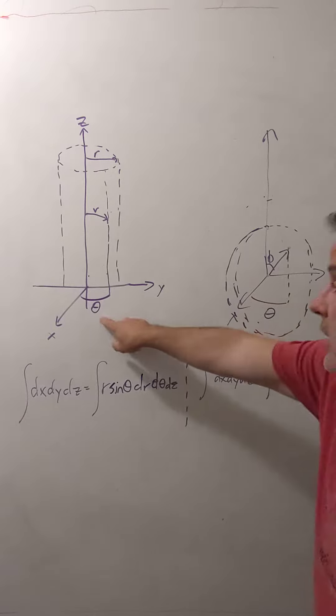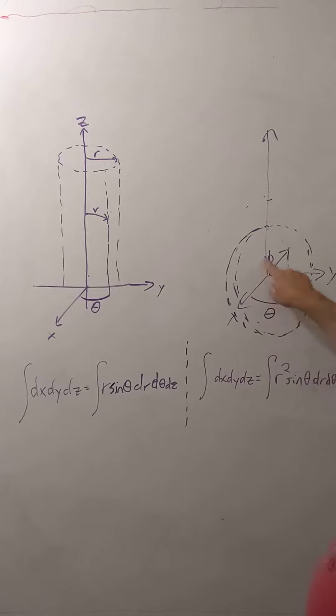So the theta has the same meaning in both, but instead of z and r there, we have r measured from the origin and the co-latitude measured from the top.